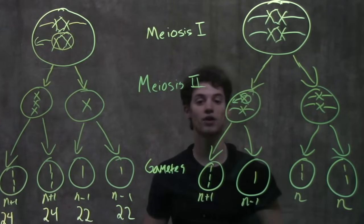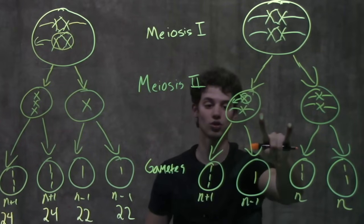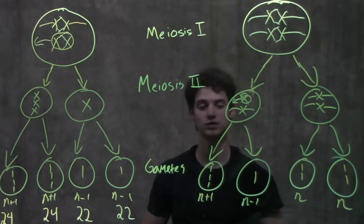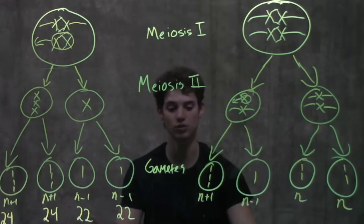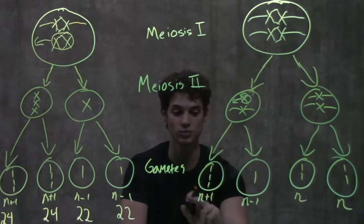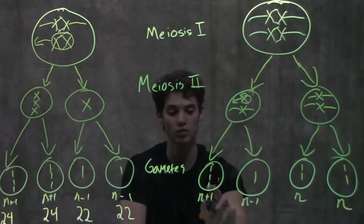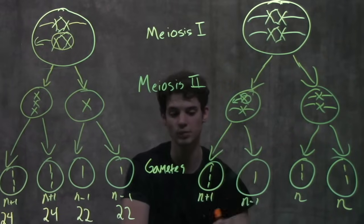Now there's a lot of variability with how nondisjunction can occur—it could occur twice, only once, you never know. A problem, for example, would tell you, and you'd have to be able to count the chromosomes. So with only one chromosome affected: n+1 is 24, n-1 is 22, and then 23 and 23.